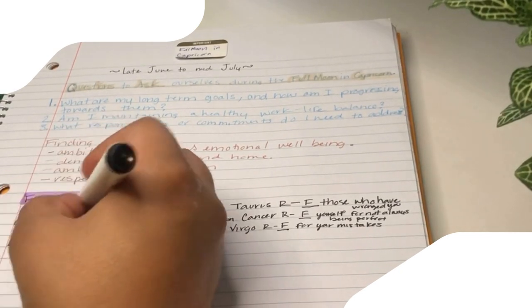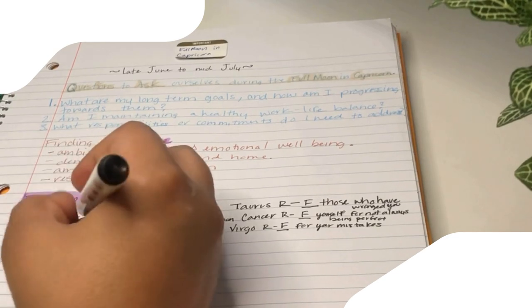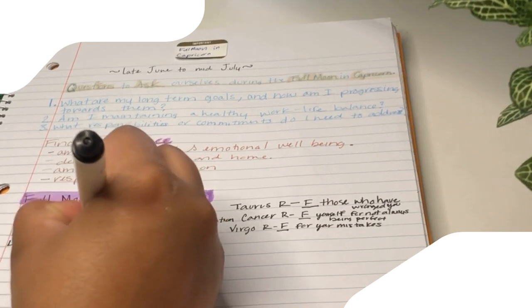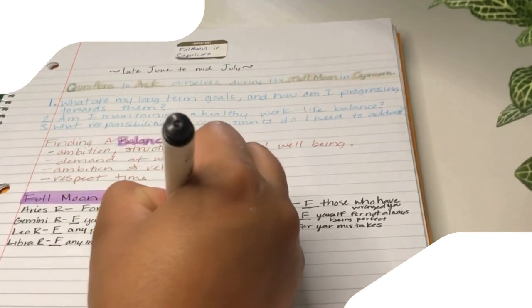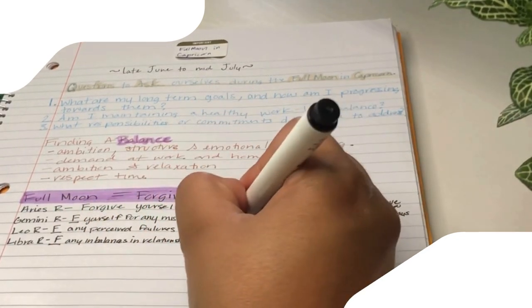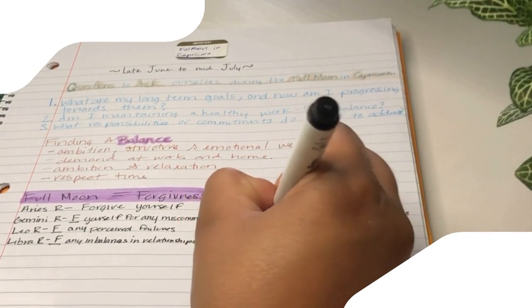The full moon in Capricorn is a time of profound reflection and growth, offering a unique opportunity to express gratitude for the energies it brings. Governed by Saturn, Capricorn is a sign known for its discipline, responsibility, and ambition.